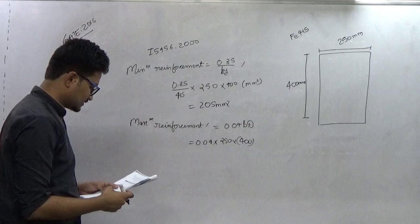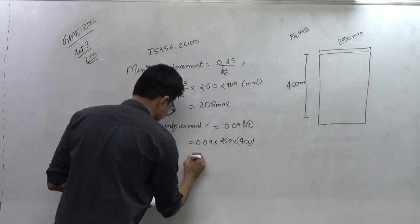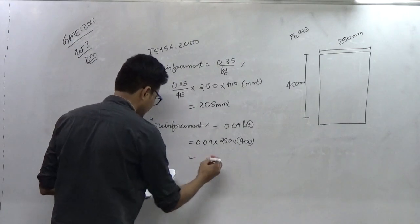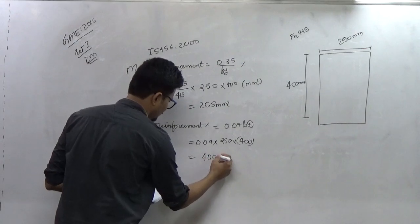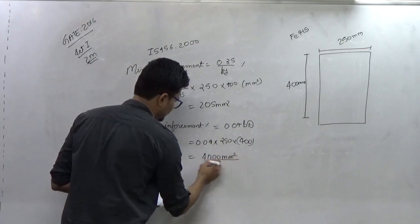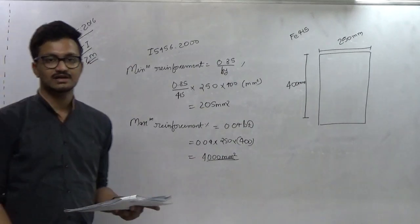So from here the maximum reinforcement area comes out to be 4000 mm square. Therefore option B is the right answer.